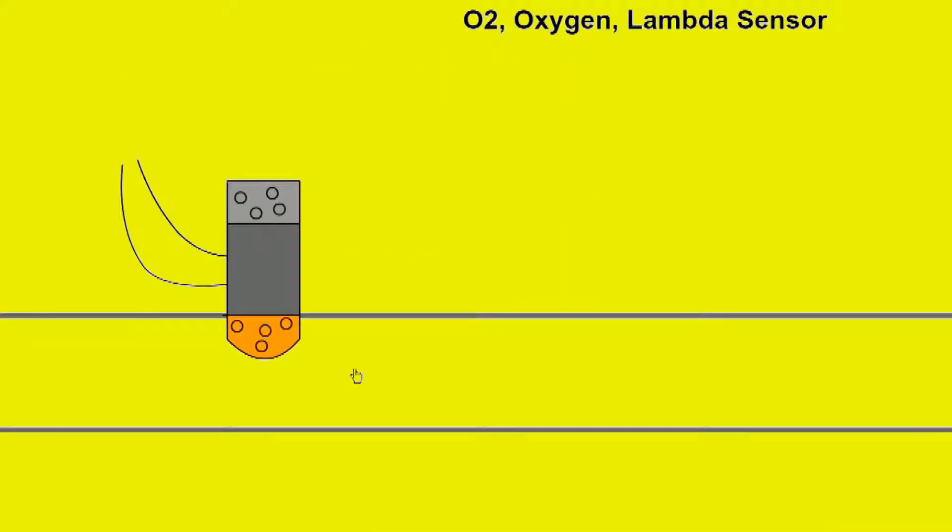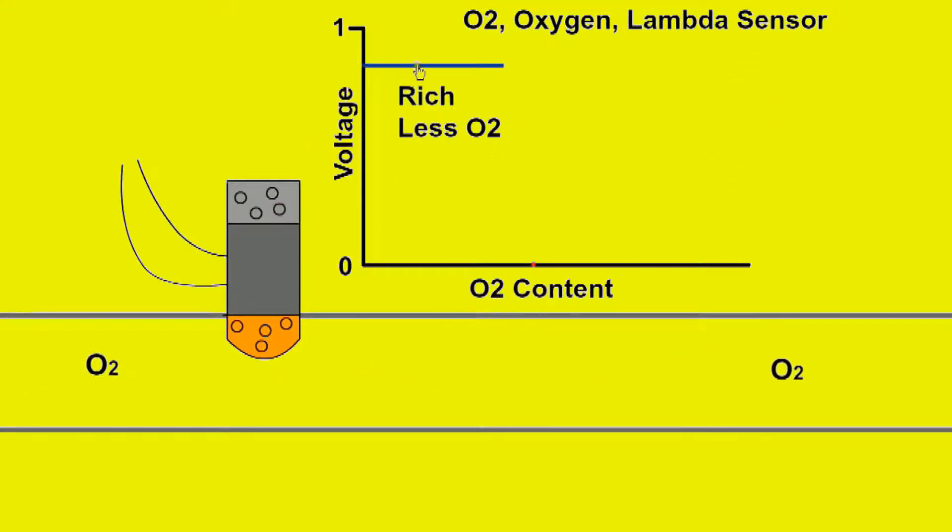The O2 sensor measures the amount of oxygen in the exhaust gas compared to the oxygen in the outside air. It generates a voltage from almost 1 volt in rich conditions to near 0 volts in leaner conditions, and the signal is sent to the ECU. The ideal air-fuel ratio occurs near the change from 1 volt to 0 volts. For a petrol engine, the ideal air-fuel ratio is 14.7 to 1 by weight.